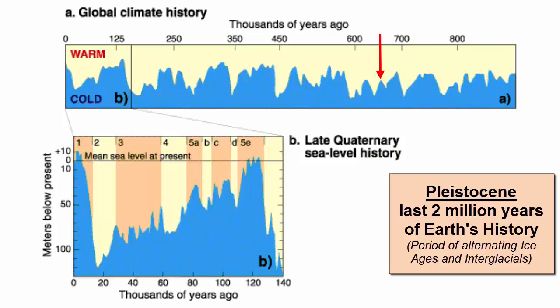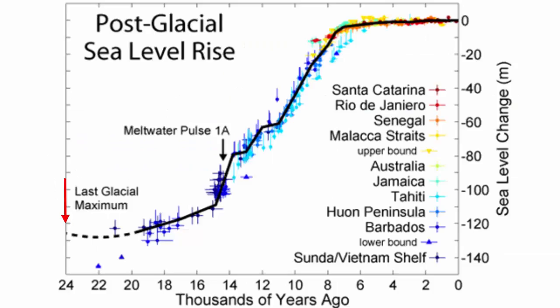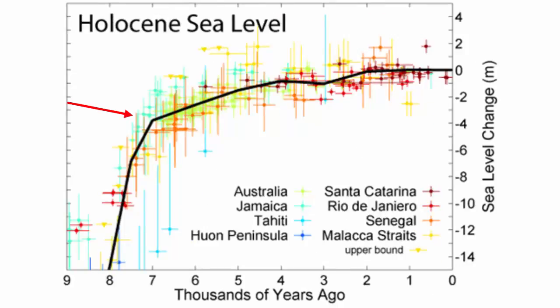In this chart, the peaks represent interglacials — warm periods such as we are experiencing today when sea level rises — while the low points represent ice ages when sea level drops. Looking at just the last 24,000 years since the last ice age ended, we see a slow steady rise of sea level until about 8,000 years ago, after which it maintained a pretty flat level. This next image highlights just the last 8,000 years, and we can see there is still an increase, but it's gradual — that is, until the last 130 years.